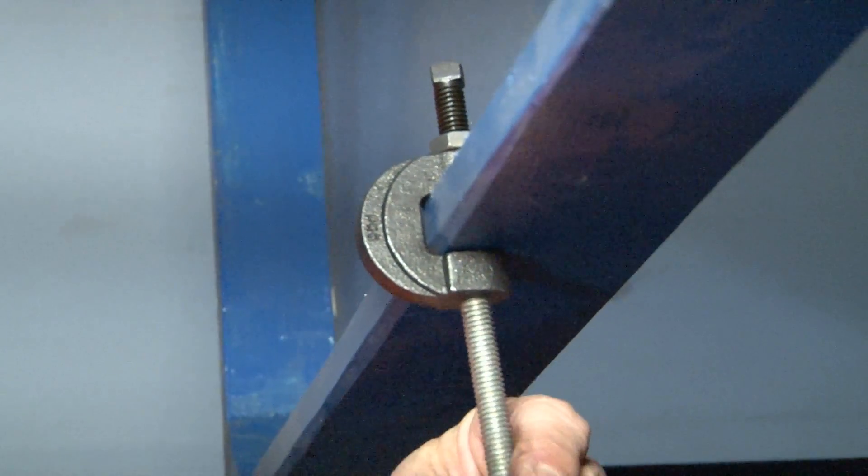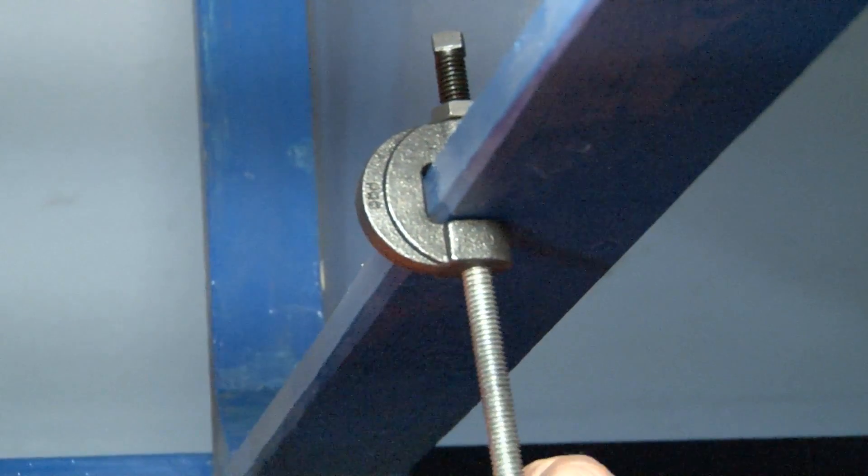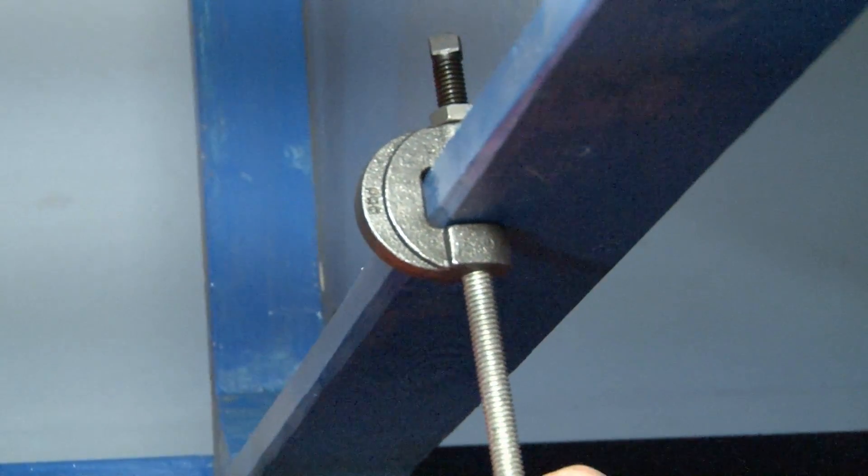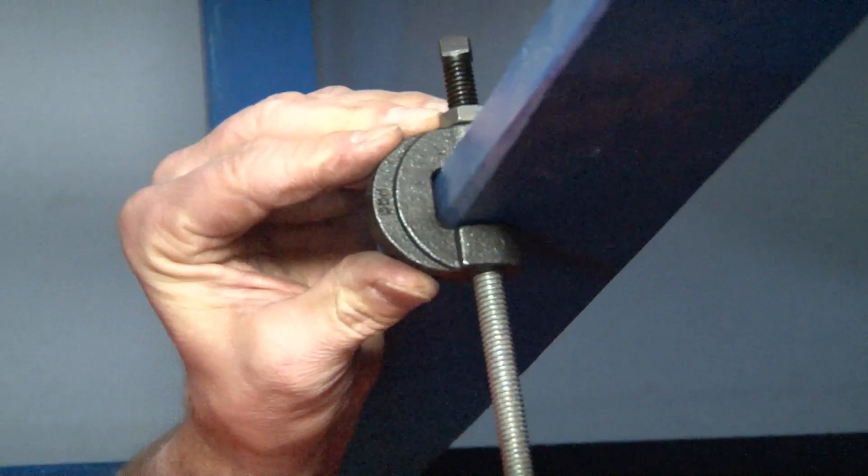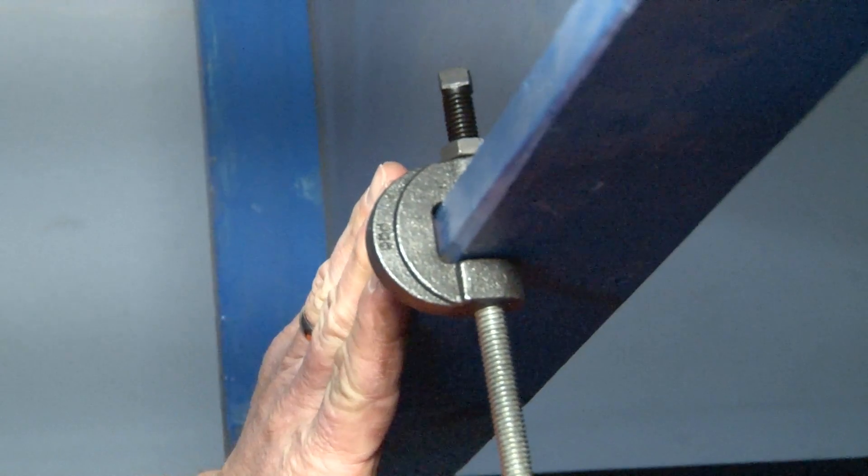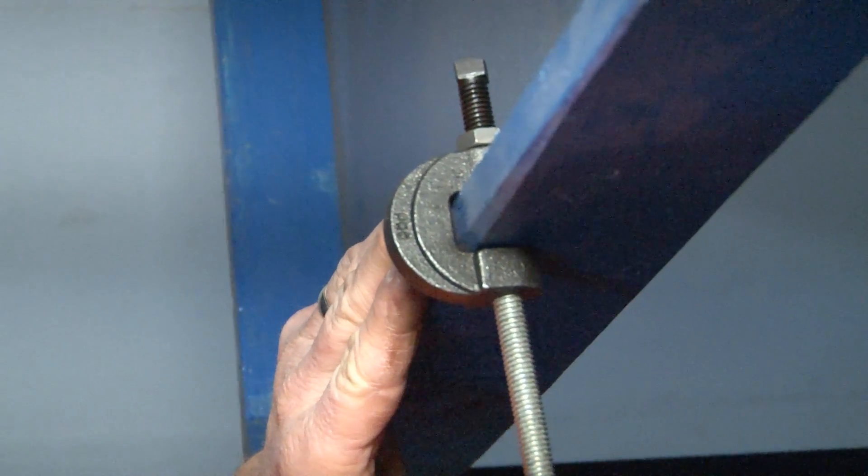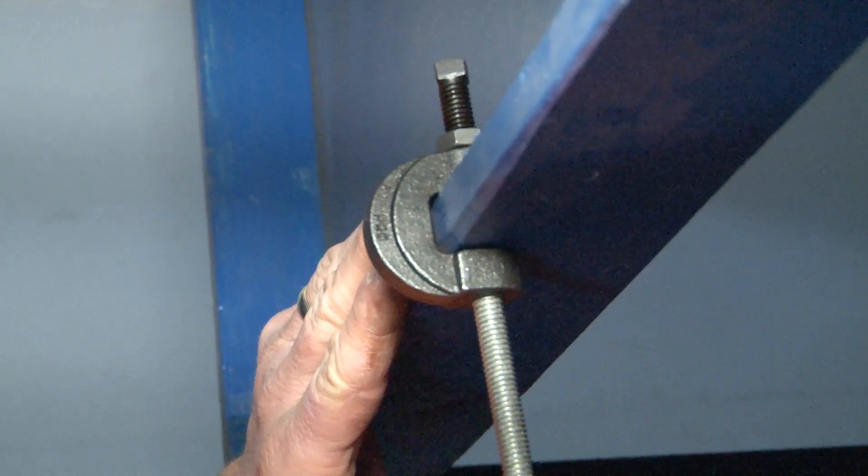Simply align the threads, screw it into place until it hits the bottom of the beam and you have a really tight, secure, heavy-duty threaded rod from a structural beam. You're ready to hang a variety of electrical, low-voltage, plumbing, or HVAC appliances.